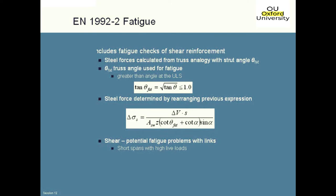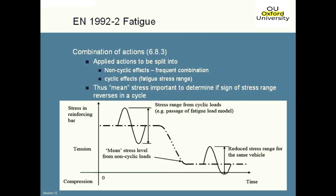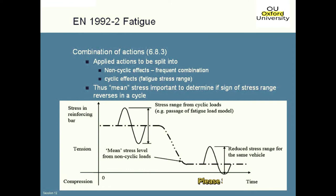In terms of combinations of actions, we'll look in a minute at the fatigue vehicle that we have to trundle across the deck, but we have to do that in a combination. What the Eurocode tells us to use is: when we're using our cyclic stress ranges from the fatigue vehicle, we need to consider at the same time the frequent combination of actions. We need something to define — whether it's the frequent or quasi-permanent — to set a base level of stress, as you can see in this diagram here.